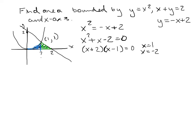We split this into two integrals. The first is the integral from 0 to 1 of x squared (top function minus bottom function of 0). The second integral covers the green region from x equals 1 to x equals 2, where the top function is y equals negative x plus 2. Both integrals are in terms of x with dx, so all functions are expressed as y equals something.